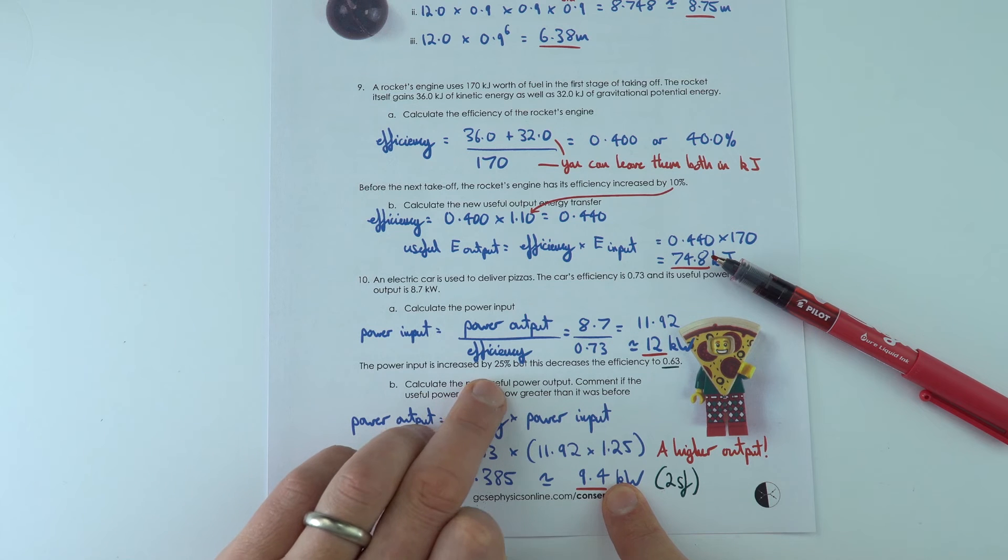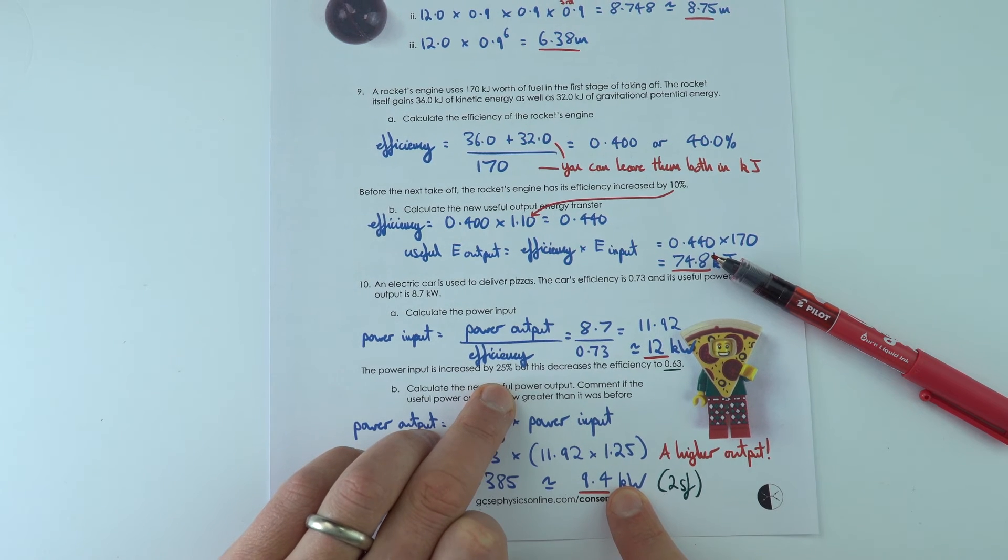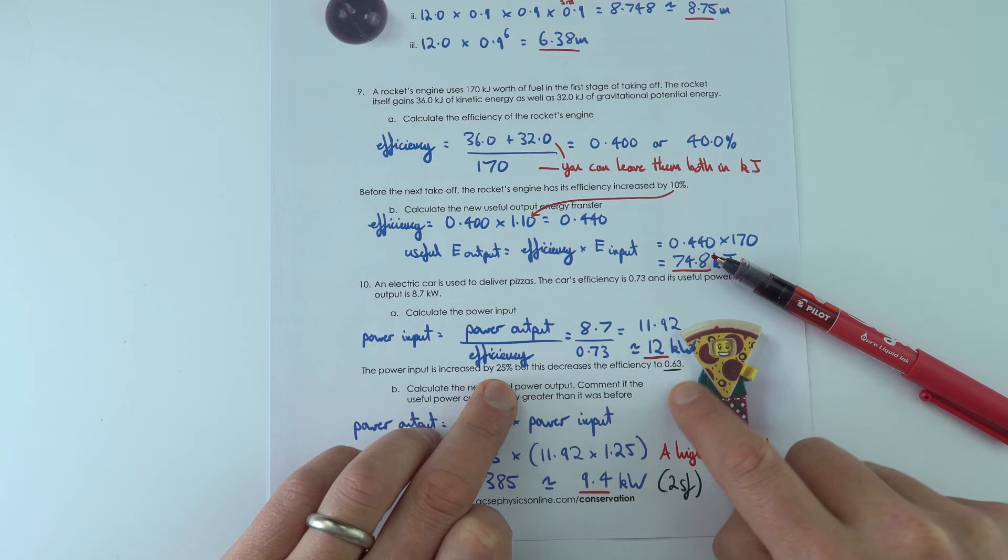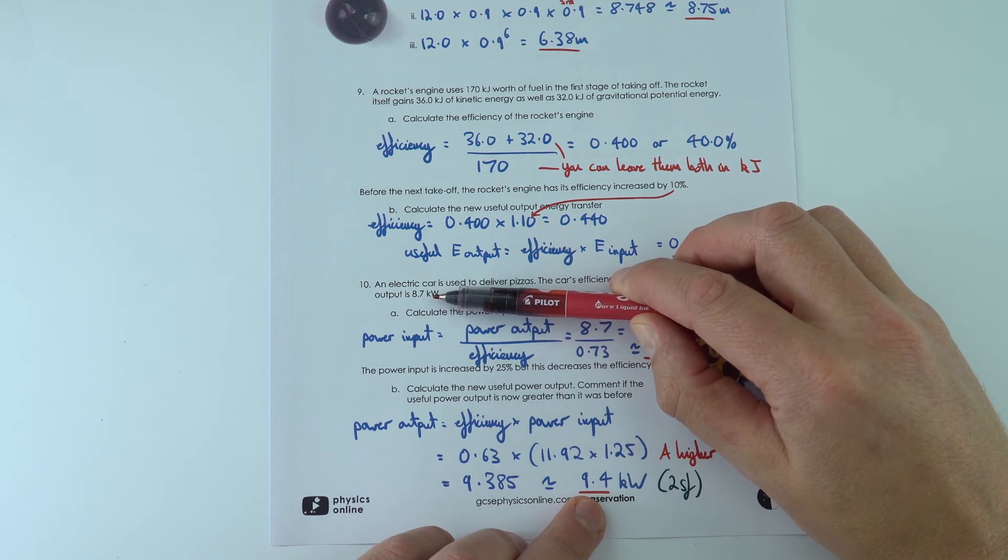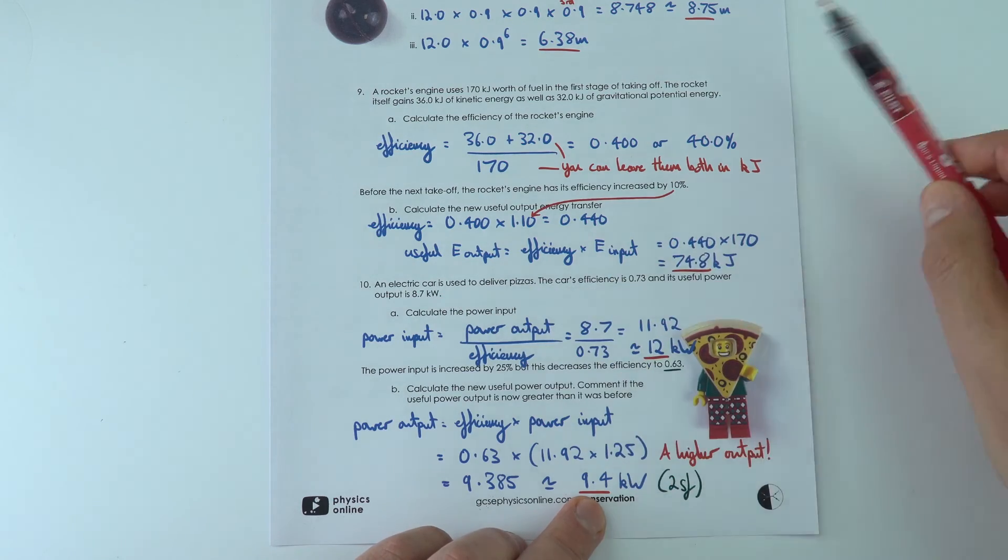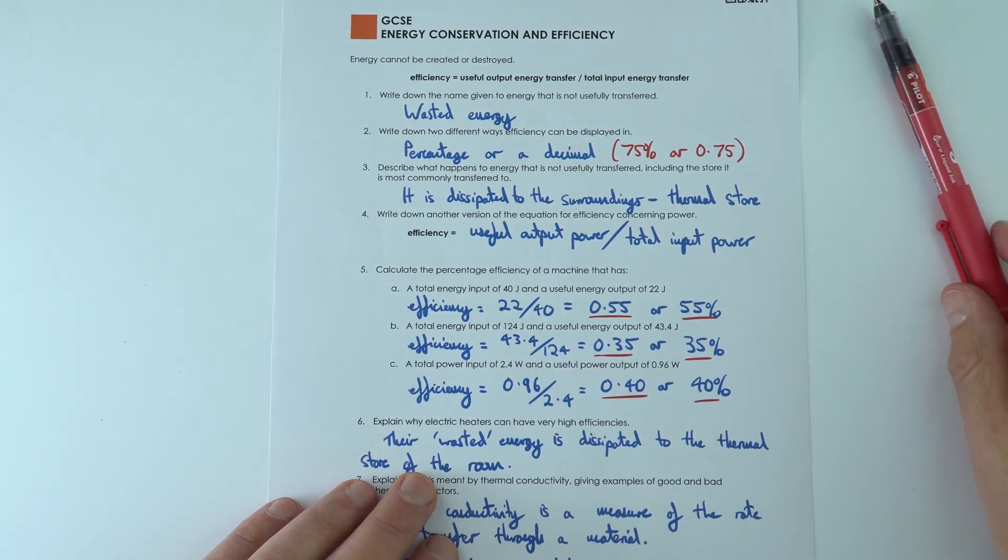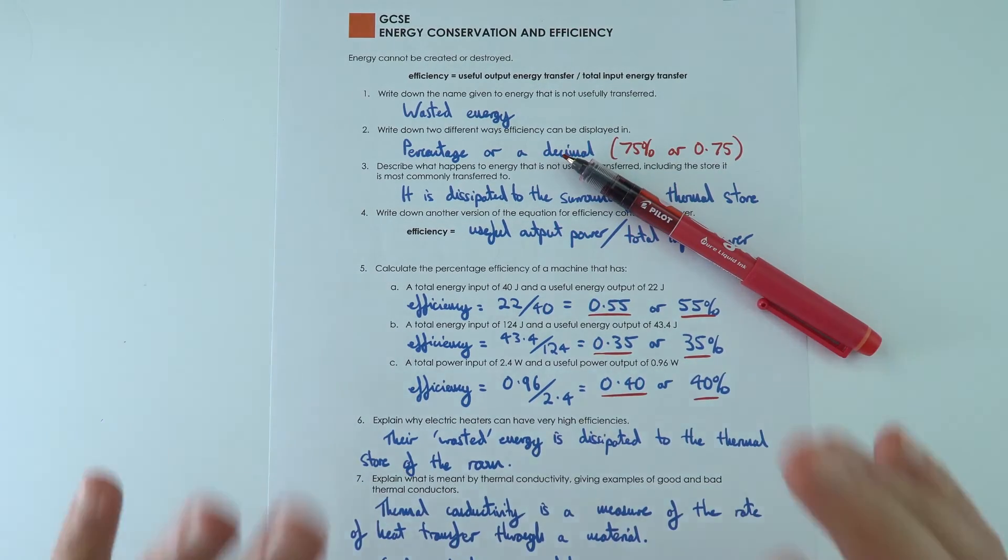Even though there's an increase in the power input, this actually decreases the efficiency, so the actual output isn't much bigger than the 8.7 that we had for part a. So that one over there, just some quick questions looking at energy conservation and efficiency.